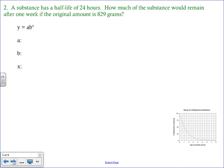Our next example talks a little bit about half-life. It says a substance has a half-life of 24 hours. How much of the substance would remain after one week if the original amount is 829 grams? So a couple key words here. First I want you to circle half-life. That is going to give us our multiplier. So b is going to be one half.